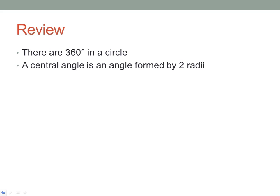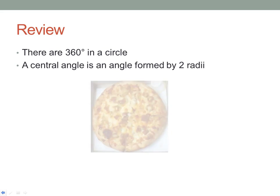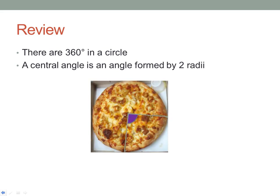Quick review: there are 360 degrees in a circle — we talked about that when we were doing arc length. We also talked about a central angle in the arc length formula; that was the letter N. A central angle is an angle formed by two radii. I cut this pizza into fours — the gray lines represent the radii, and the central angle formed between two radii is shown in purple.